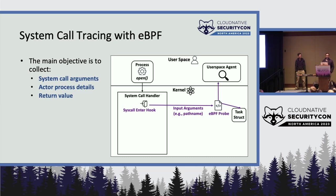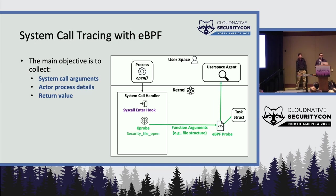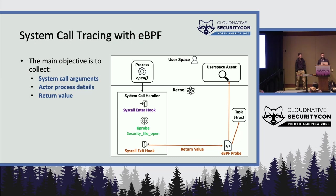Another option for syscall tracing with eBPF is to attach an eBPF probe to an internal kernel function invoked as part of kernel processing of the system call. These probes are called K probes. When you attach an eBPF probe to an internal kernel function, the kernel passes all input arguments of that function to the probe, which can then send those along with actor process details to user space. To get the return value, the primary option is to hook into the syscall exit trace point, where the kernel passes the return value to your eBPF probe.